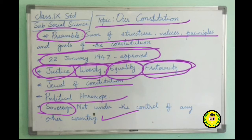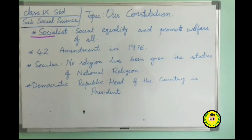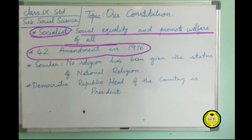Next, it is Socialistic. The goal of our Constitution is to create social equality and promote the welfare of all the people in our country. To enable this, directive principles of state policy have been incorporated in our Constitution through the 42nd Amendment done in 1976. Through this amendment, land reforms and other progressive economic reforms were introduced.